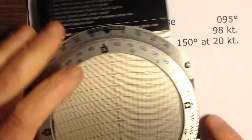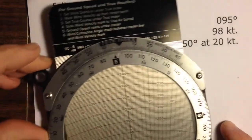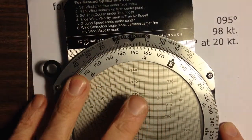The first thing you do is set your wind direction under the true index. The wind direction is coming from 150, so I'm going to spin this until I see 150 on the true index.